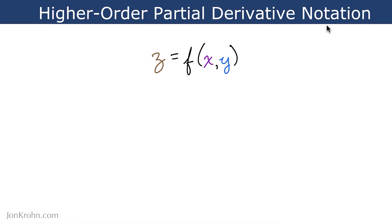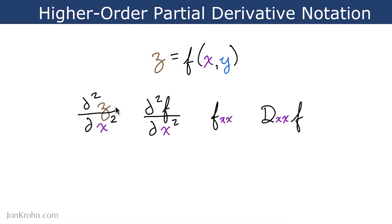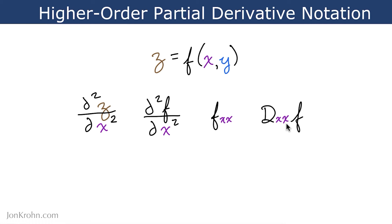And now for a quick note on higher-order partial derivative notation. So if we have z as a function of x and y, then the unmixed second-order partial derivative — we've already been using this Leibniz notation. Leibniz notation is my favorite because it includes both variables, and so it makes things very clear, especially when we're canceling out terms in, say, the chain rule. But all four of these notations are equivalent, and so you could see any of these in the literature or you're welcome to use any of them yourself. In this notation here, similar to the Leibniz notation, except we're including the function name instead of the variable z. And the other kind of class of notation is this subscript notation. We have the function name f, and then in subscript we have x twice, because we're differentiating with respect to x and then with respect to x a second time. And same idea with the differentiation operator.